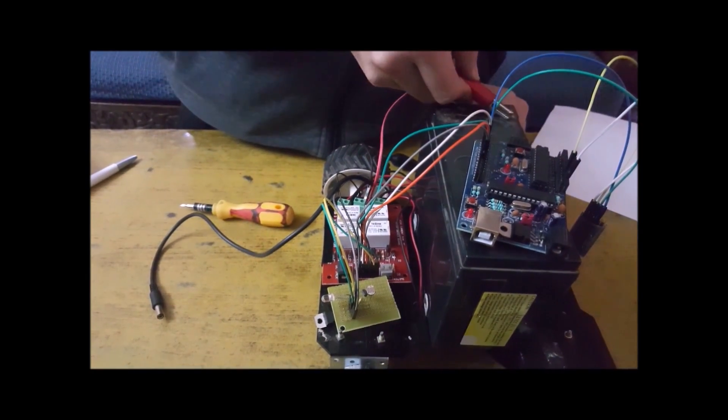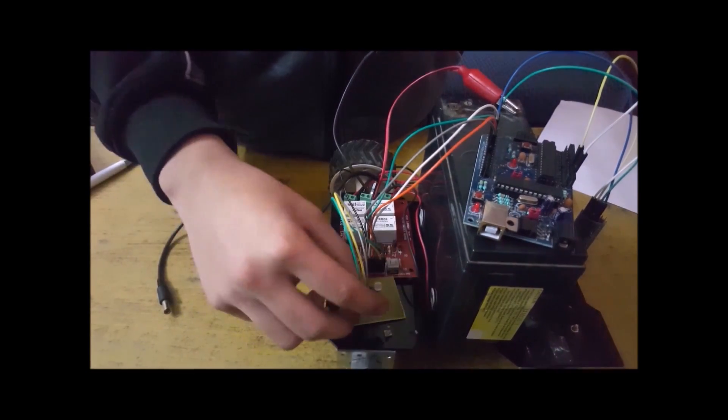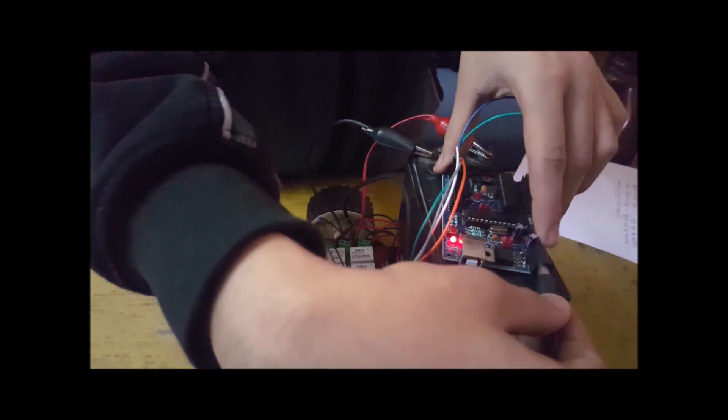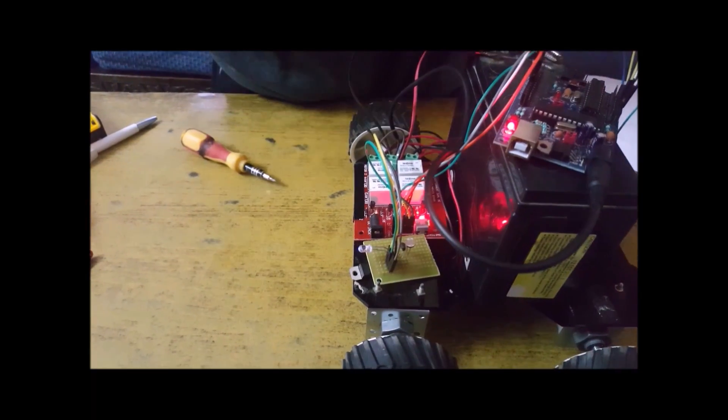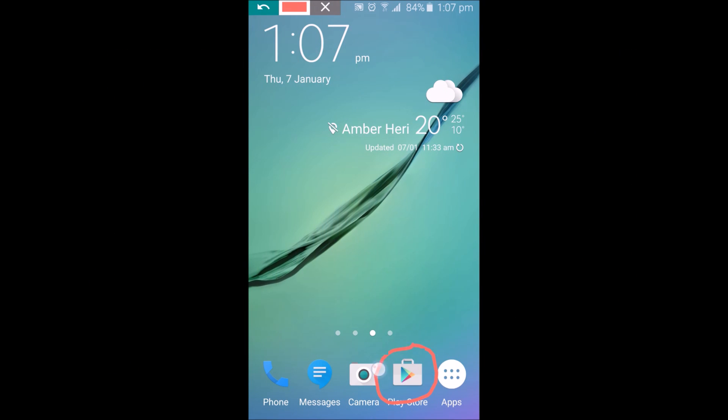Now I am connecting the battery. This is the Arduino input pin. And here's a demo of automatic headlamp. Now open Play Store on your smartphone.